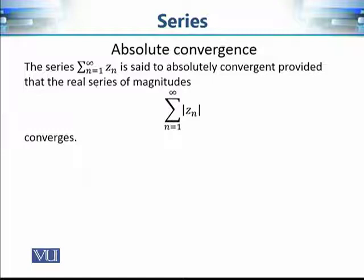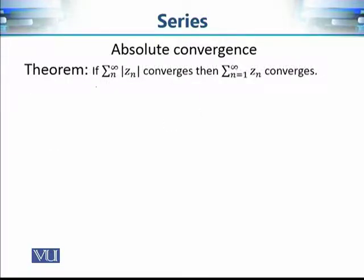If we are given a series, it is said to be absolutely convergent provided that the corresponding real series formed by taking the moduli of its terms converges. There is a very simple result: if this series of moduli converges, then the original series must also be convergent. This is another useful criterion for checking convergence of a complex series, and once again we use our knowledge of real series.